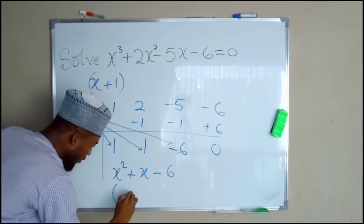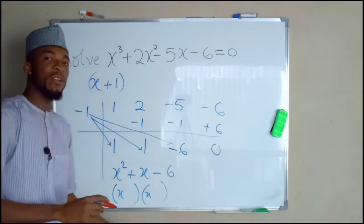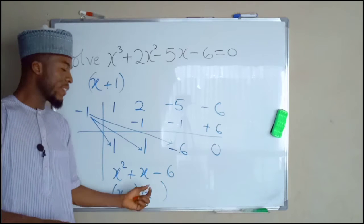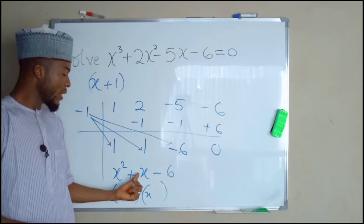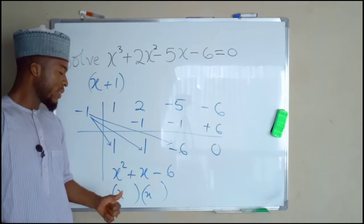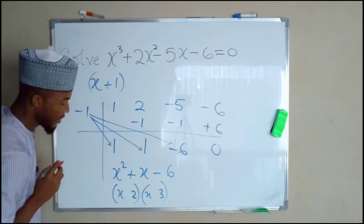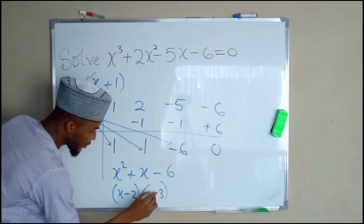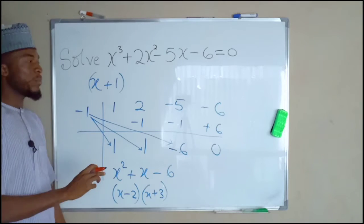By factorization, we are going to think of two numbers which when we multiply them together, we get negative 6, and when we add them together, we get positive 1. That is the coefficient of the middle term. And the numbers are negative 2 and positive 3. Hence, we have obtained the remaining factors.